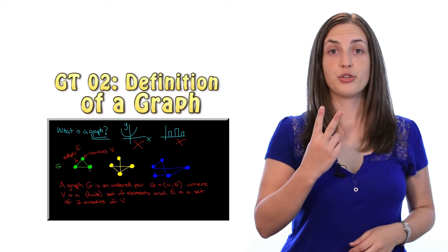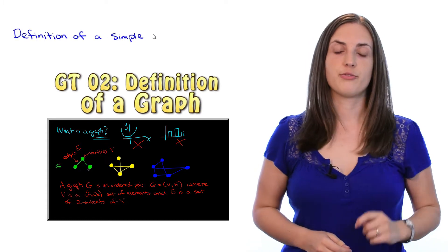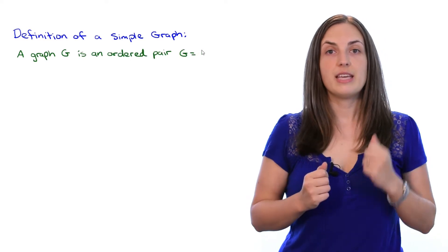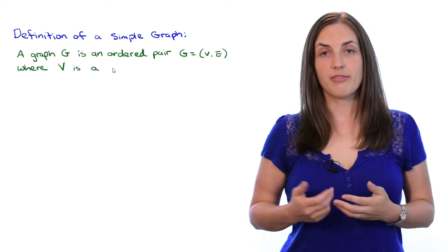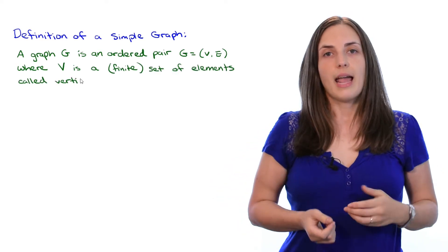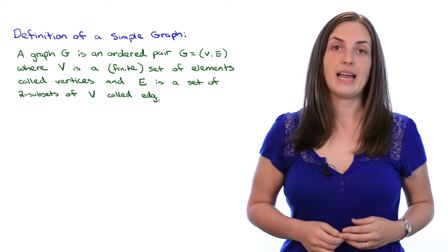If you remember video number two, then you'll recall that the definition of a simple graph is as follows. A graph G is an ordered pair (V, E), where V is a set of elements, usually considered to be finite, called vertices, and E is a set of two subsets of the set V, and those are called edges.